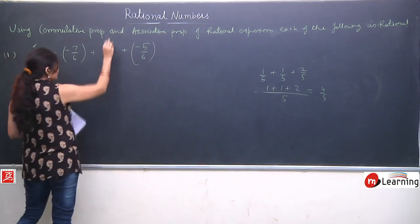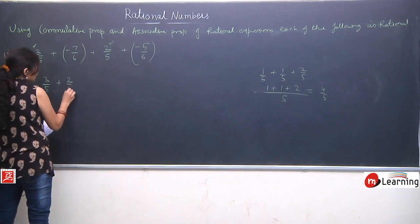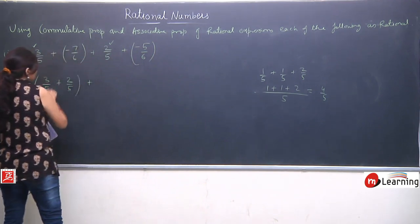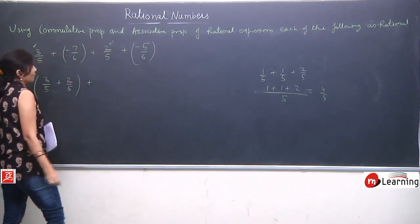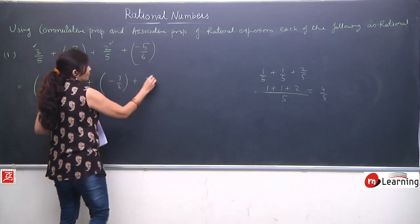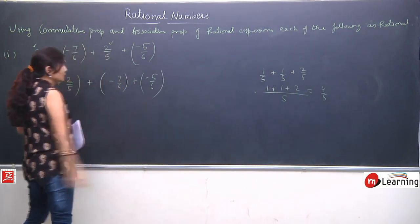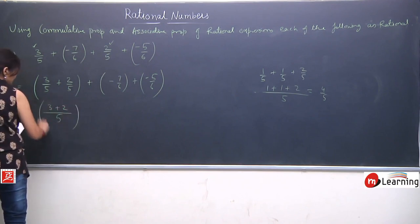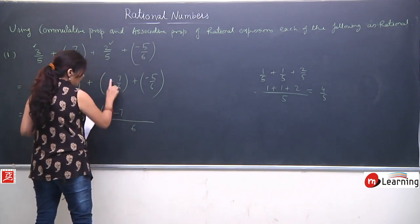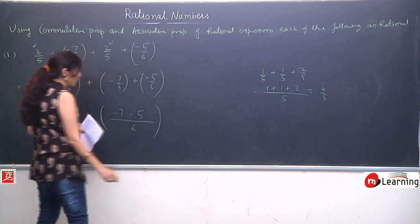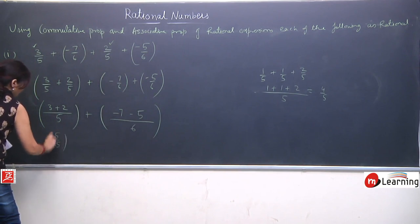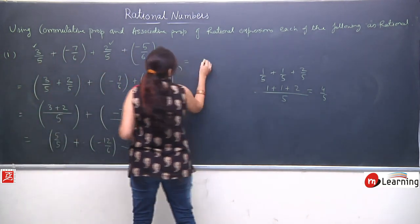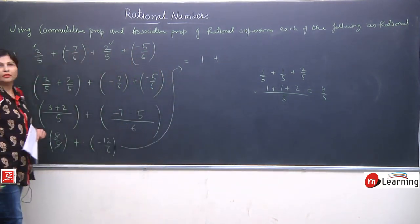Here we will collect the same-denominator terms together. The term 3/5 and 2/5 both have denominator 5, so we collect these two terms — this is using commutativity, we have rearranged them. Similarly the terms −7/6 and −5/6 both have denominator 6, so their LCM is 6. The LCM for the first group is 5, so numerator stays as-is: 3 + 2 = 5 upon 5. For the second group: −7 + (−5) = −12 upon 6. So we have 5/5 plus (−12/6).